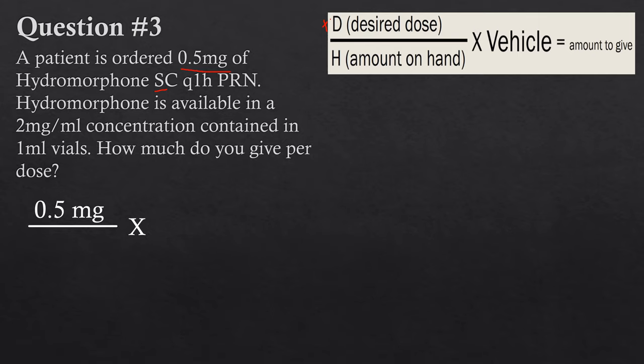Next, how much do we have on hand? Hydromorphone is available in a 2 milligrams per mL concentration, contained in one milliliter vials. There's a little bit of too much information in this question — something instructors will do to throw you off. What matters is the concentration, not what size vial it comes in. It could come in a 10 mL vial, a 50 mL vial, a 100 mL bag — that doesn't matter. What matters is the concentration.